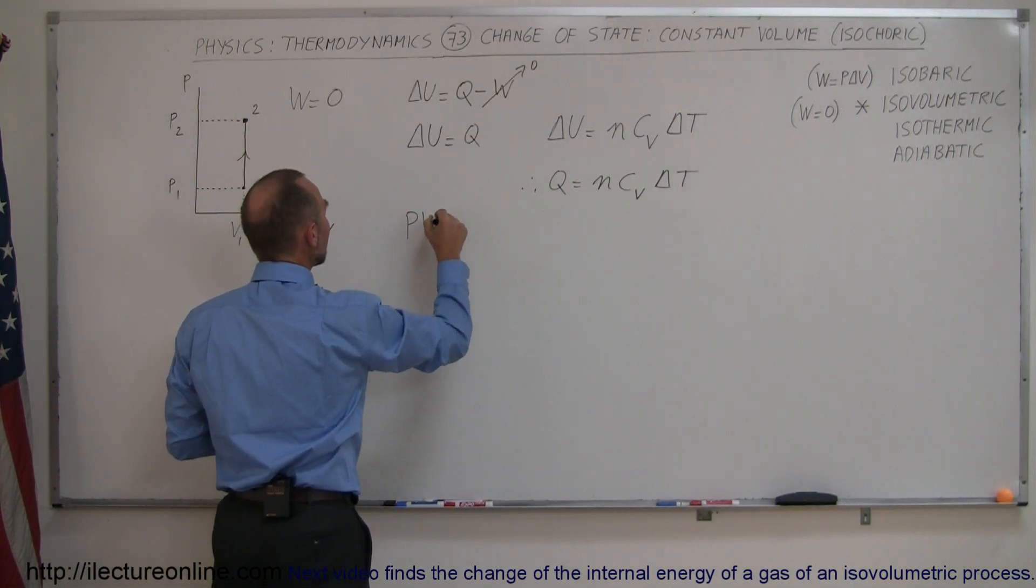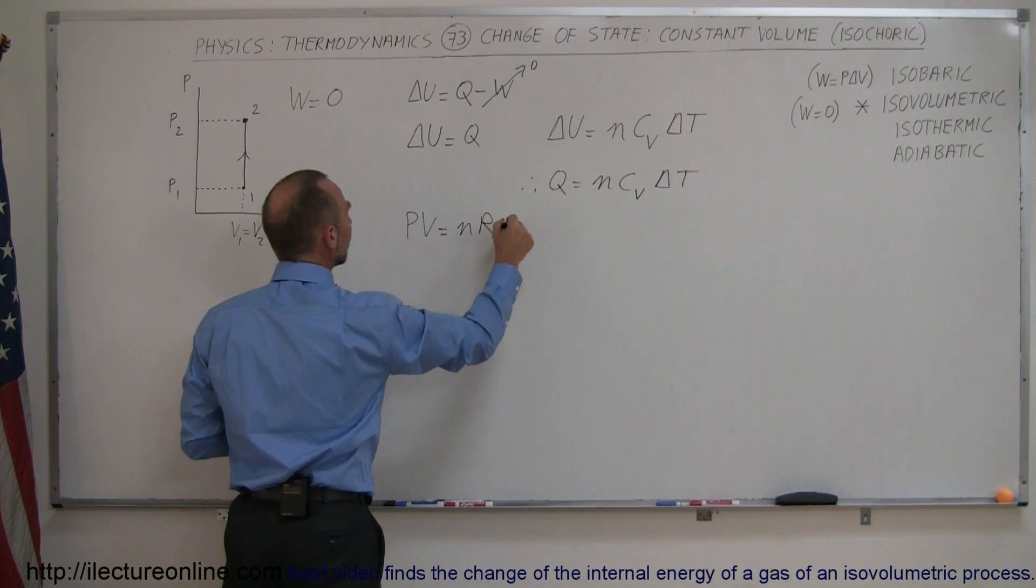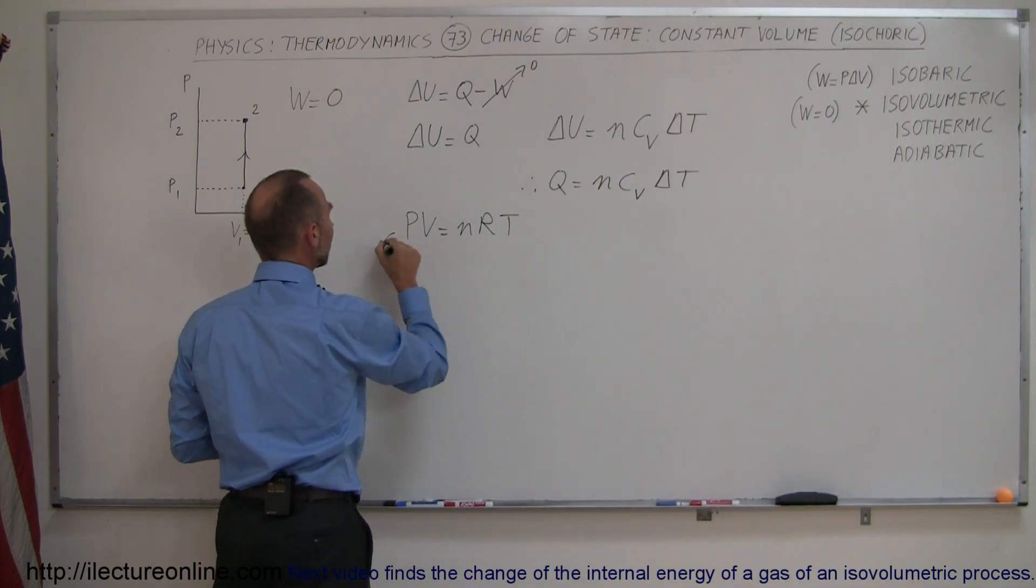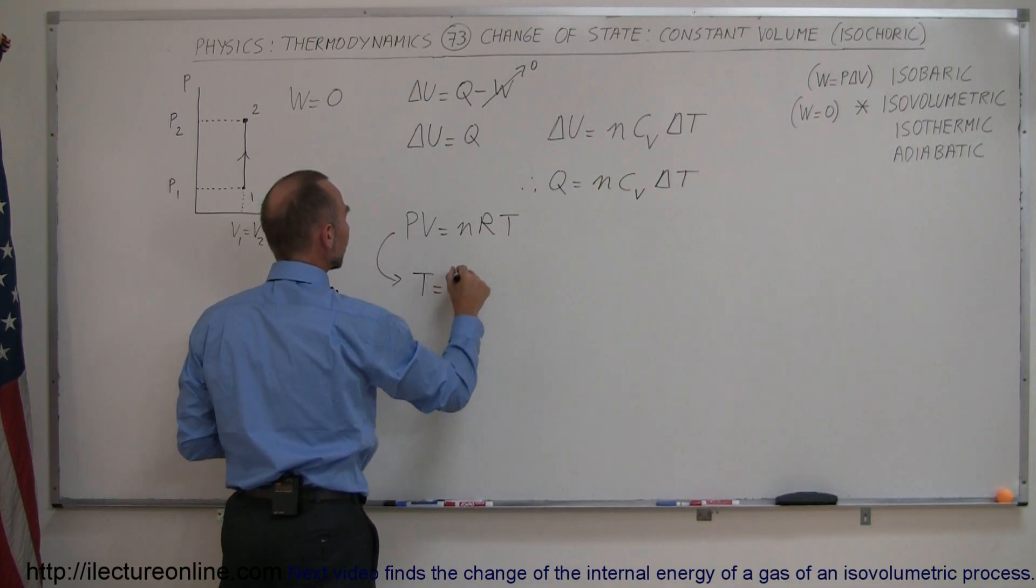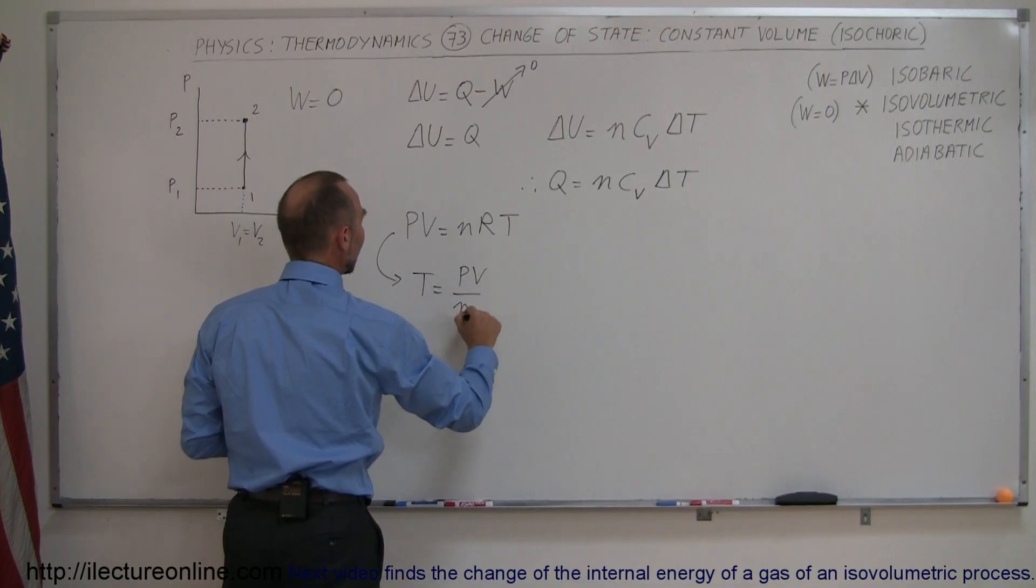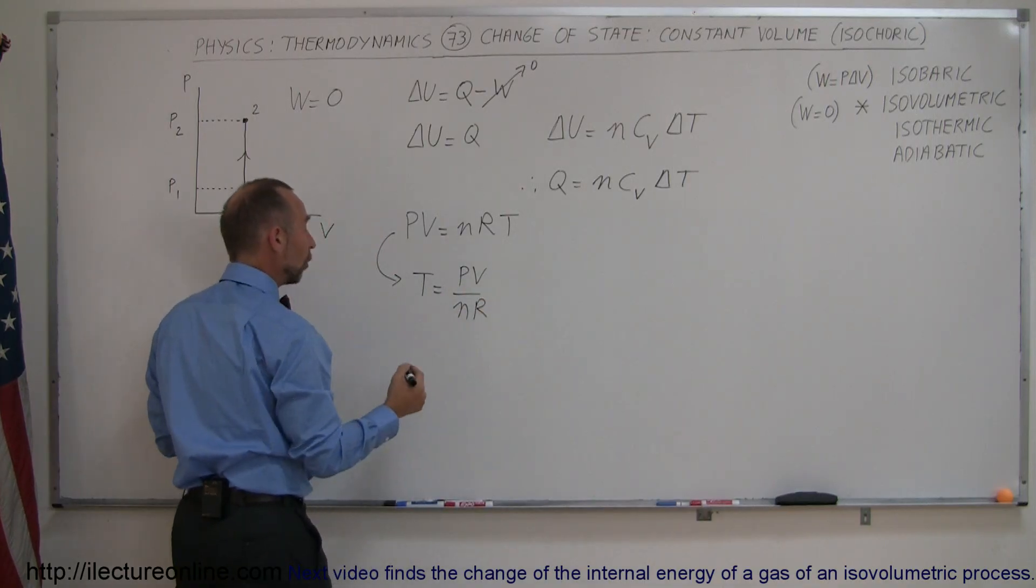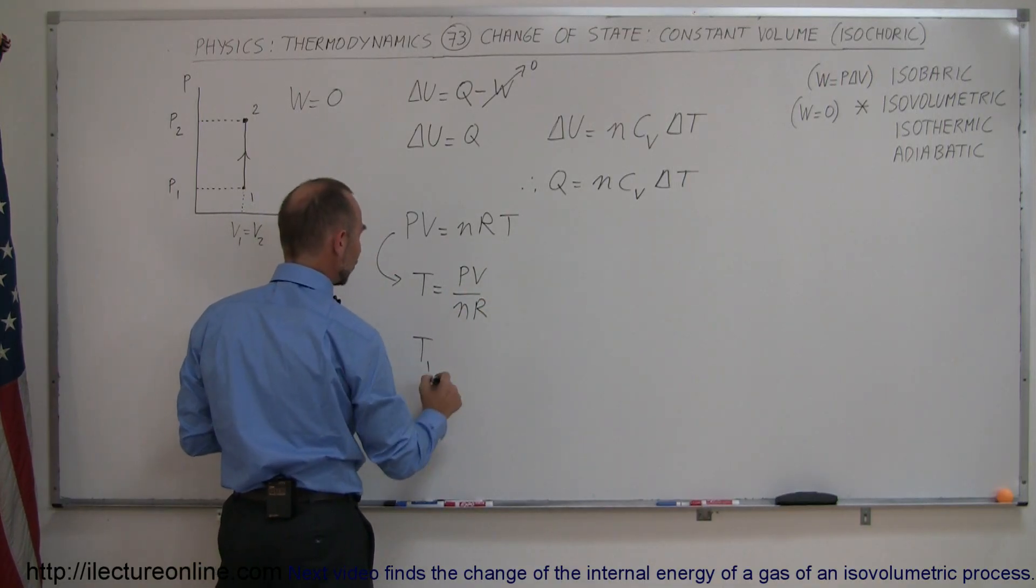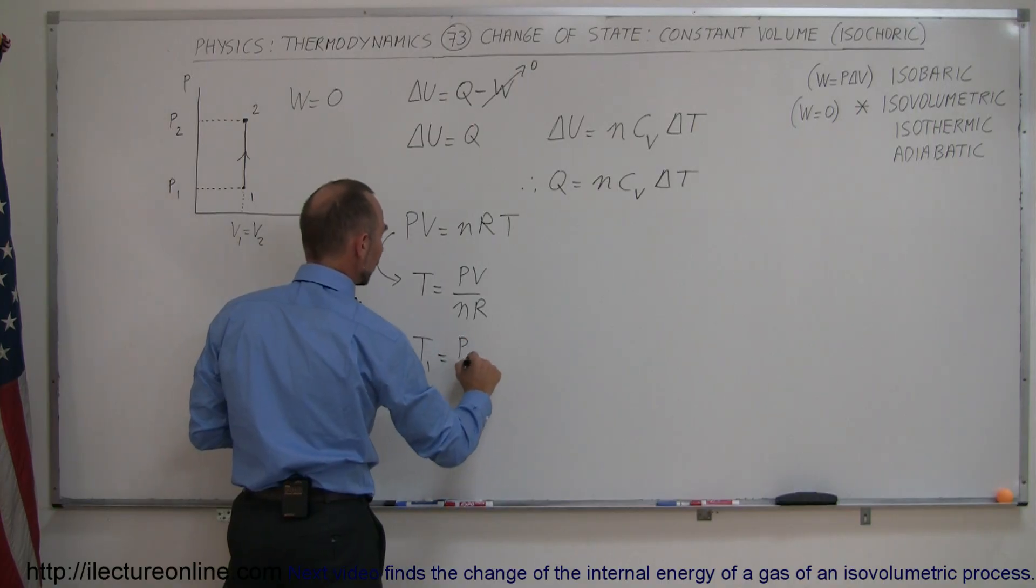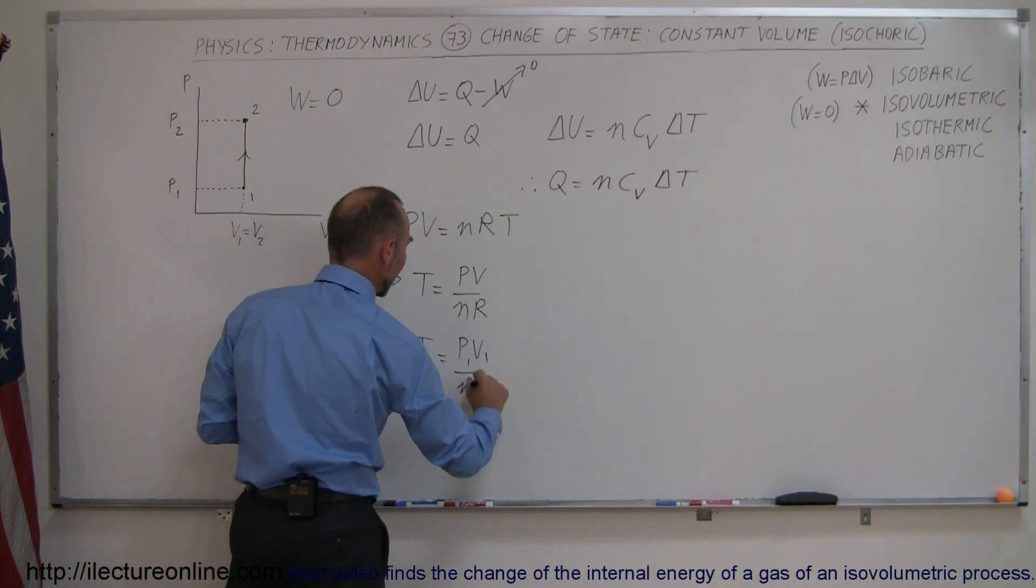The PV equals nRT equation. So when we take this equation, we can say that T is equal to PV divided by nR. And in the case of the initial state, that is equal to the initial pressure times initial volume divided by n times R.